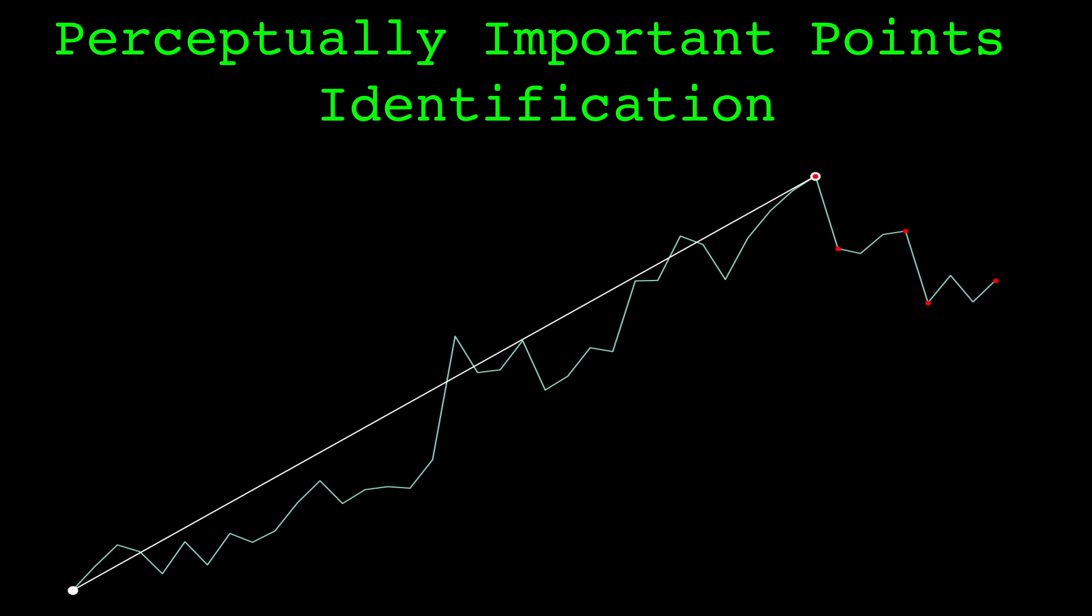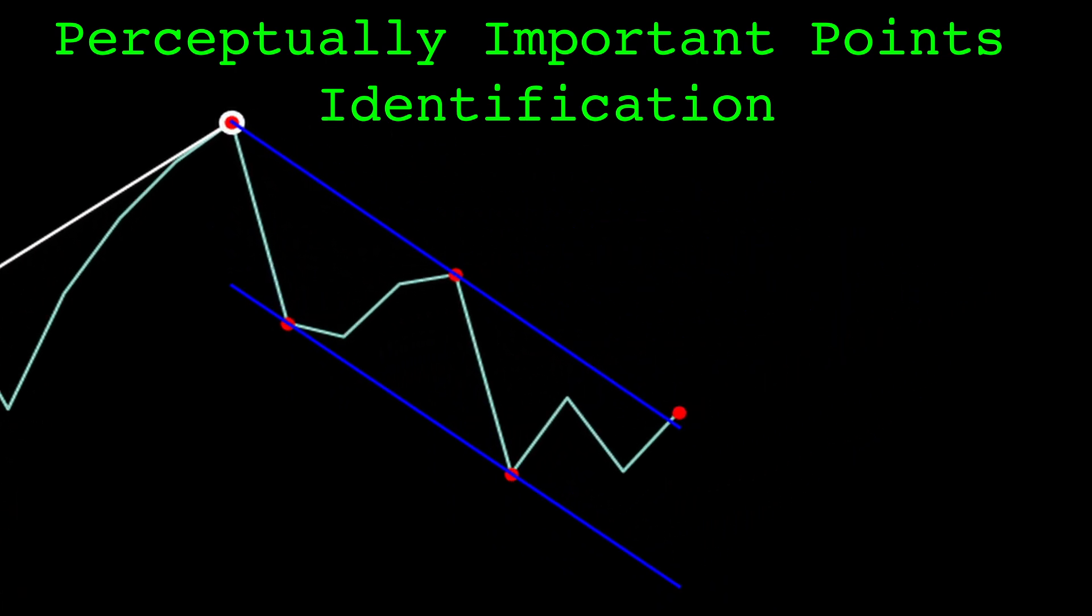Here are the five found perceptually important points in red. The upper bounding line of the flag is the line connecting the first and third point. The lower bounding line of the flag is the line connecting the second and fourth points. The pattern is confirmed when the price breaks out of the bounding lines. If we zoom in a bit, we can see that the current point does break out of the range, confirming this pattern.